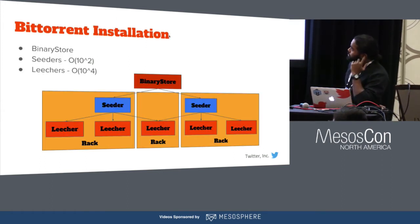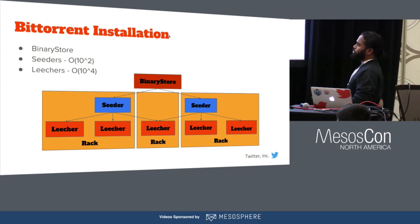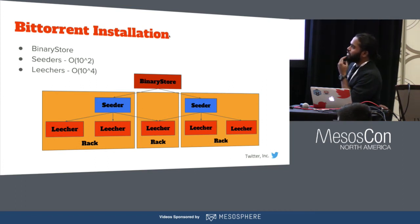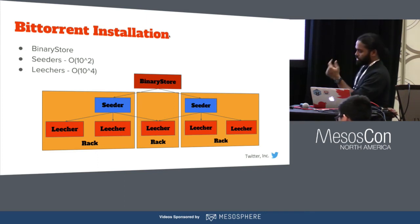So we ended up rolling our own distribution mechanism based on the BitTorrent protocol. We made slight changes to the protocol to make it more efficient and avoid unnecessary off-rack traffic. The protocol essentially prefers to fetch pieces of files present locally in the same rack. The binary store hosted the actual file system image, and we had a layer of peers called seeders responsible for downloading the image and making it available for the Mesos agents. This was necessary since the binary store did not have enough throughput to match the requirements of the large number of Mesos hosts. The last layer is the leecher, which are peers that talk to the seeders. The modified BitTorrent protocol prefers fetching from a seeder in the local rack, and if there is no such seeder it goes over the rack.